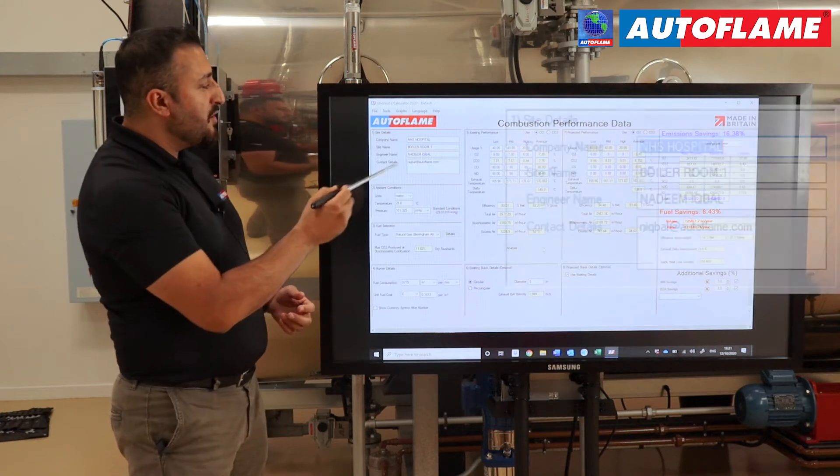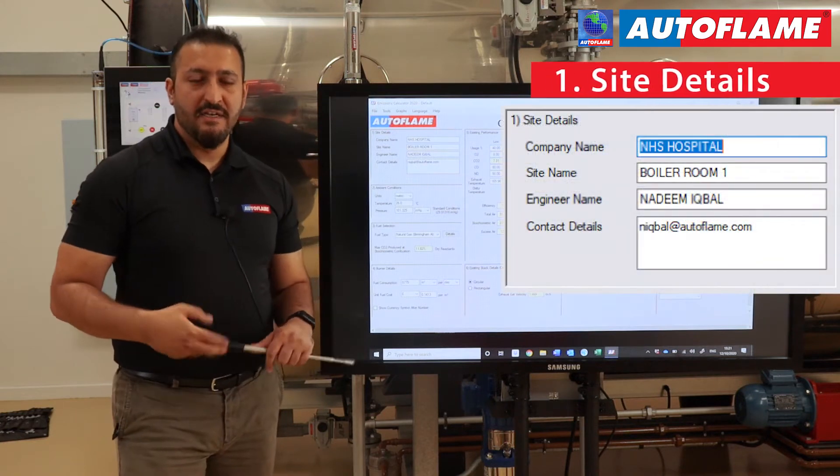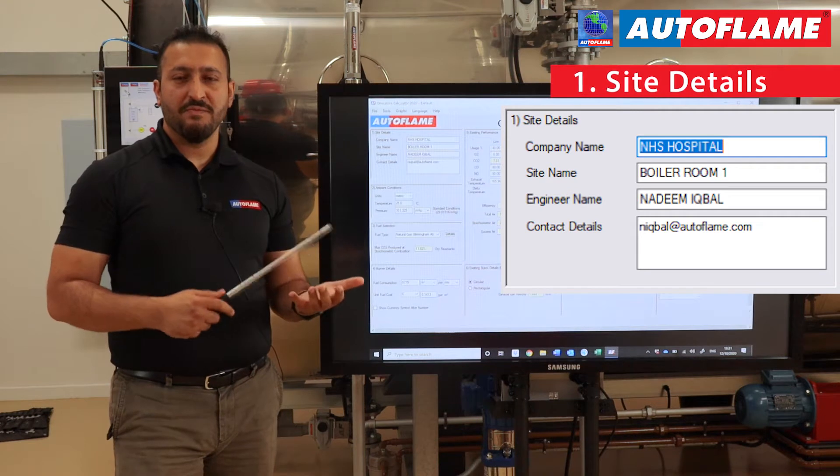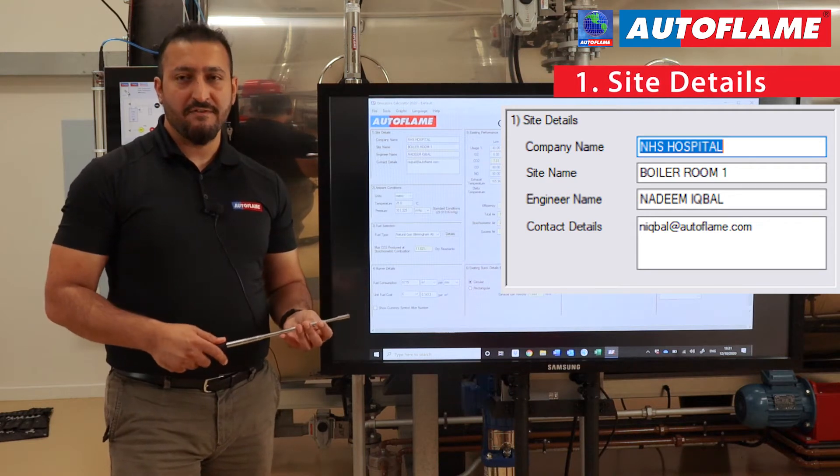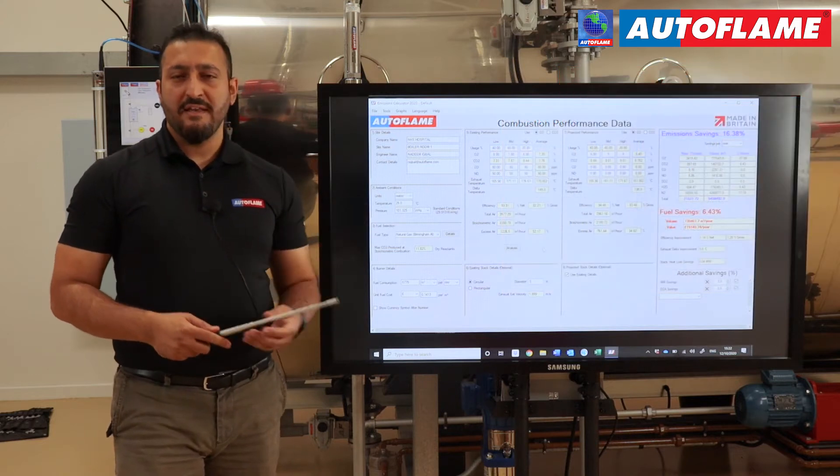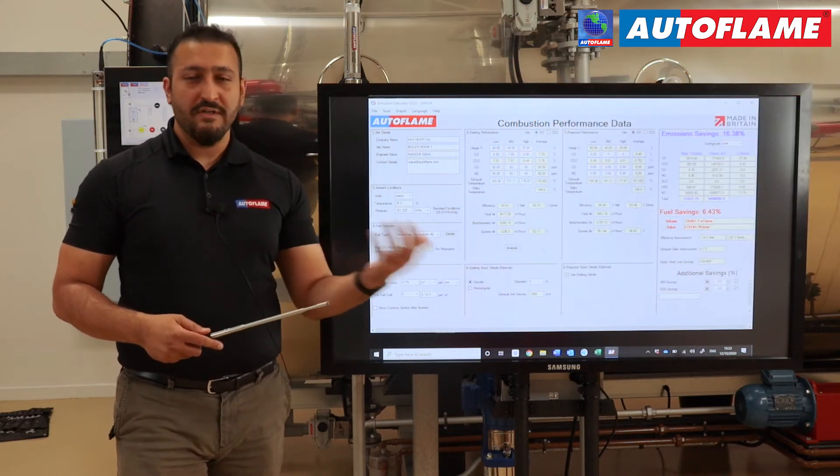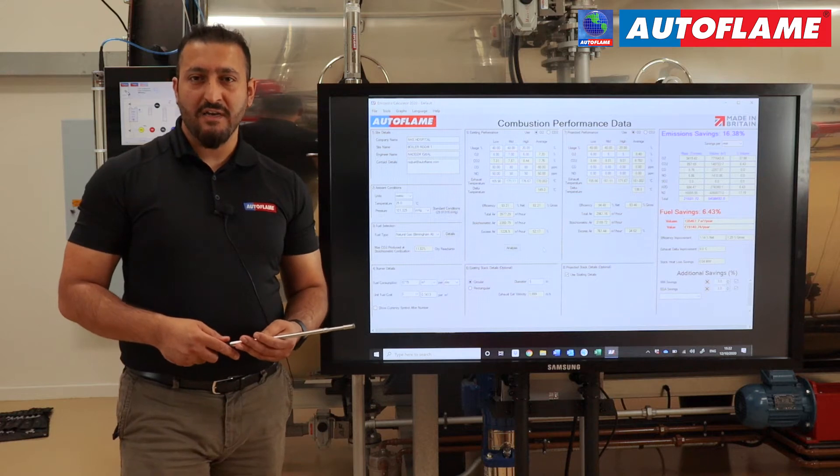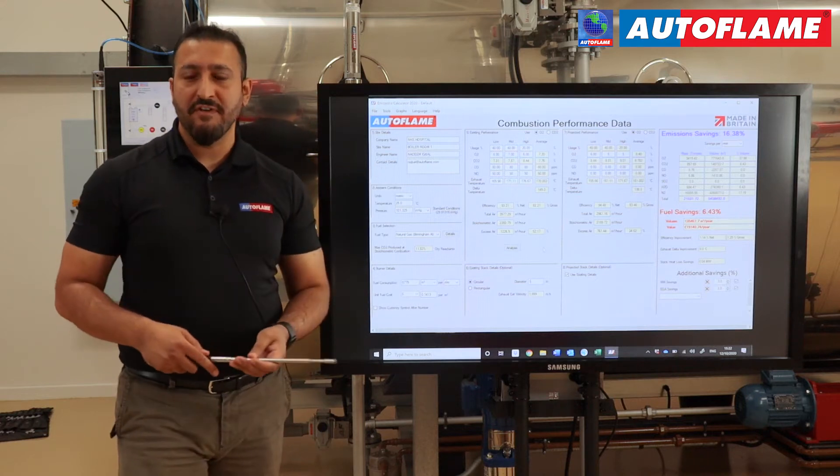When we look at box one, which is the site details, we put in the information as which site we're getting this data from, who is the engineer who's actually taking these details, in case we need to send a quote or the emissions calculator report to the client. We have this information printed on the final report.